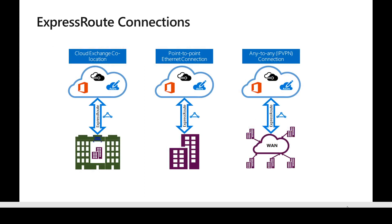Looking at different connectivity options, there are three major connectivity topologies that customers use based on their existing scenario. The first is cloud exchange co-location: this topology works when the customer has their data center co-located with a cloud exchange provider like Equinix. In this case, the ExpressRoute connectivity is established between the cloud exchange and Azure, and it may be either a Layer 2 or Layer 3 connection.